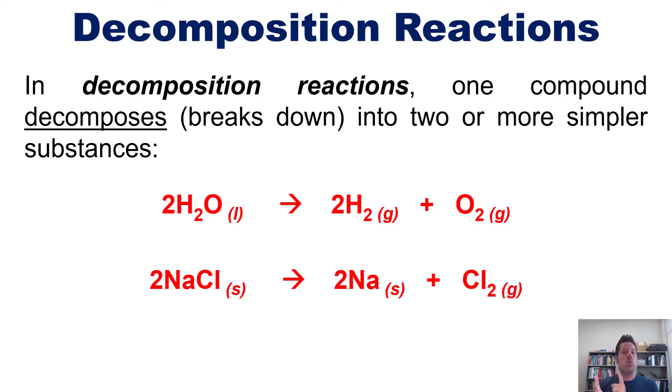Anytime you see only one reactant on the left side of your reaction arrow and two or more products on the right side, you know you're dealing with a decomposition reaction because you have one thing that's breaking apart or decomposing into multiple things.